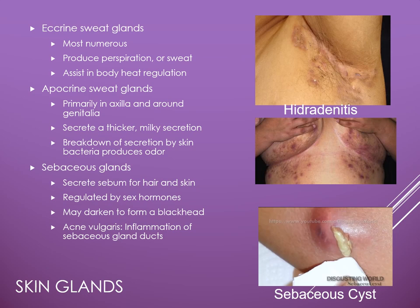Sometimes blockage of the sebaceous ducts can occur, and bacteria, skin cells, and sebum get trapped. Once that happens, an inflamed lesion develops, referred to as a papule. Other times there are more pus-filled pimples referred to as pustules. When pustules rupture, they typically cause secondary infection on the surrounding skin.